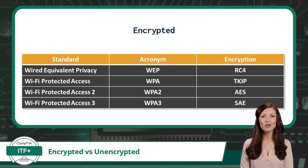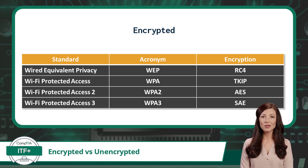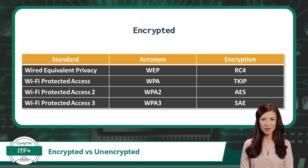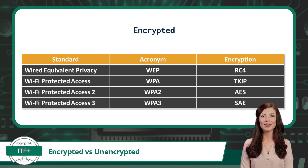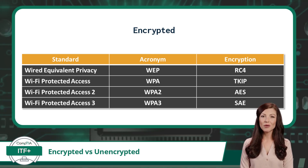And now for the bonus encryption standard: WPA3. WPA3 is the latest and most advanced wireless encryption standard. It builds on the strengths of WPA2 and adds even more security features, such as the SAE encryption mechanism. WPA3 is currently the gold standard for Wi-Fi security, and if your wireless network device supports it, it is the best choice for keeping your network safe.